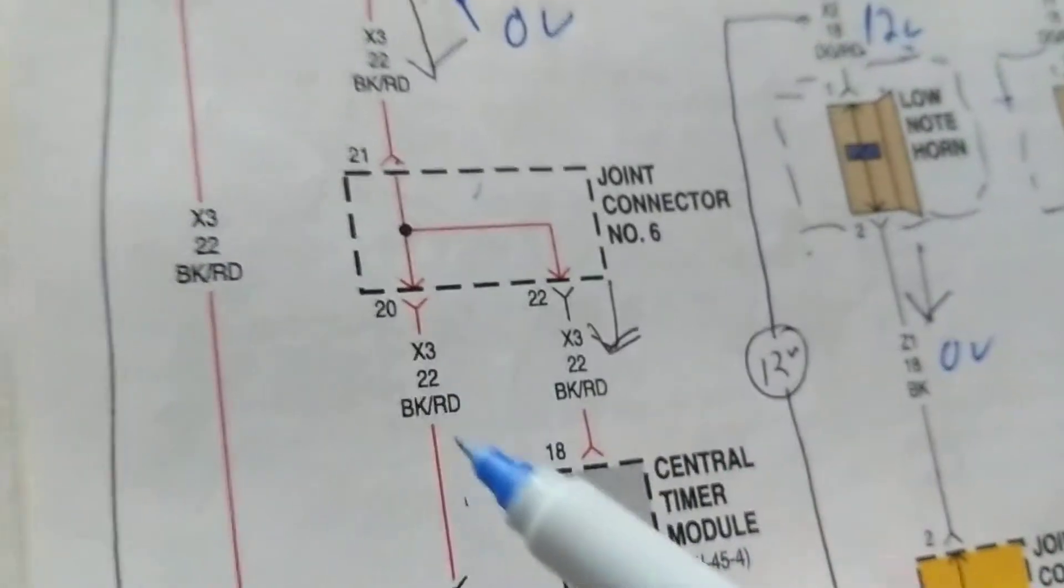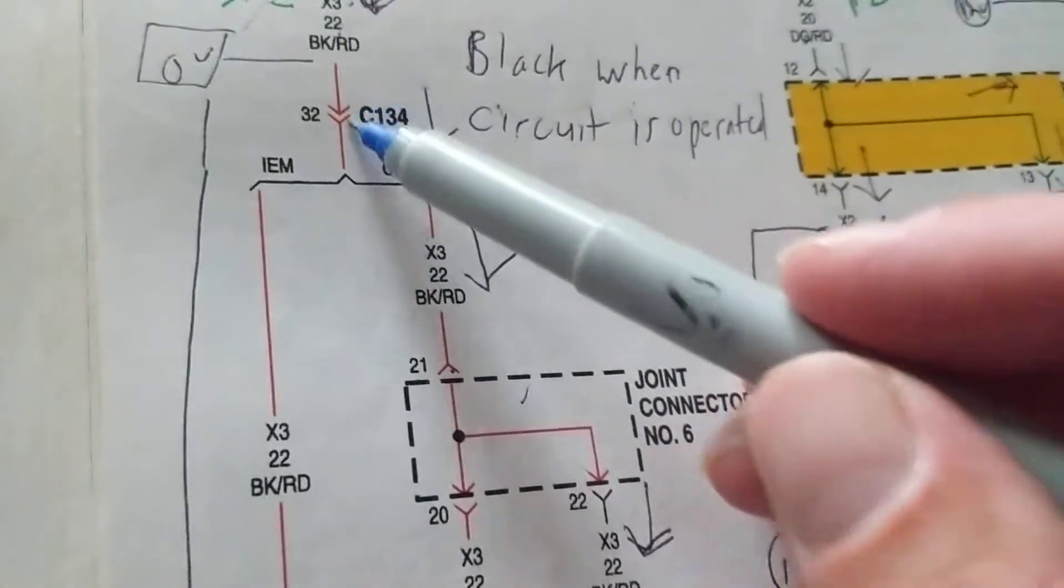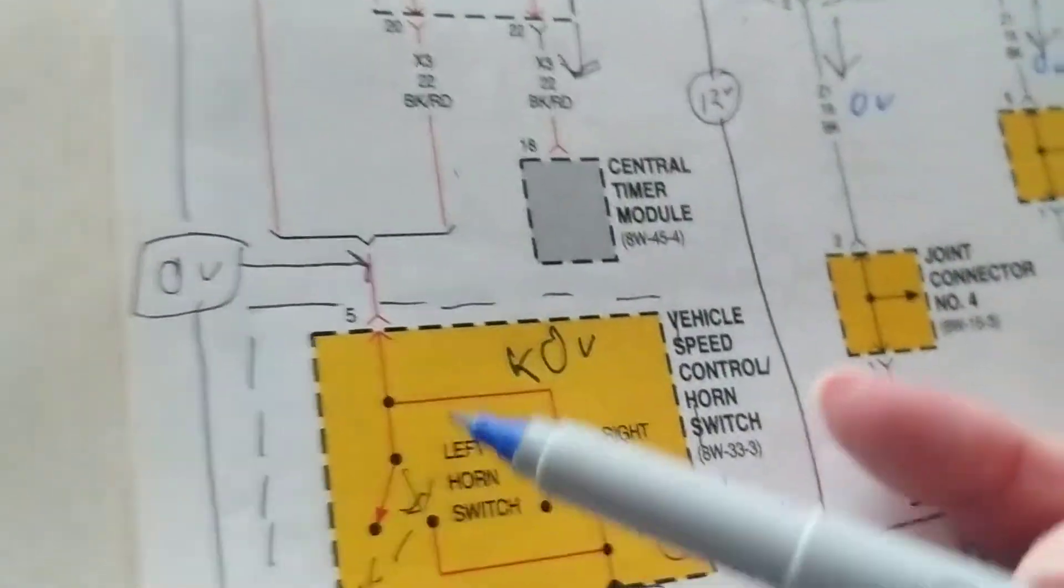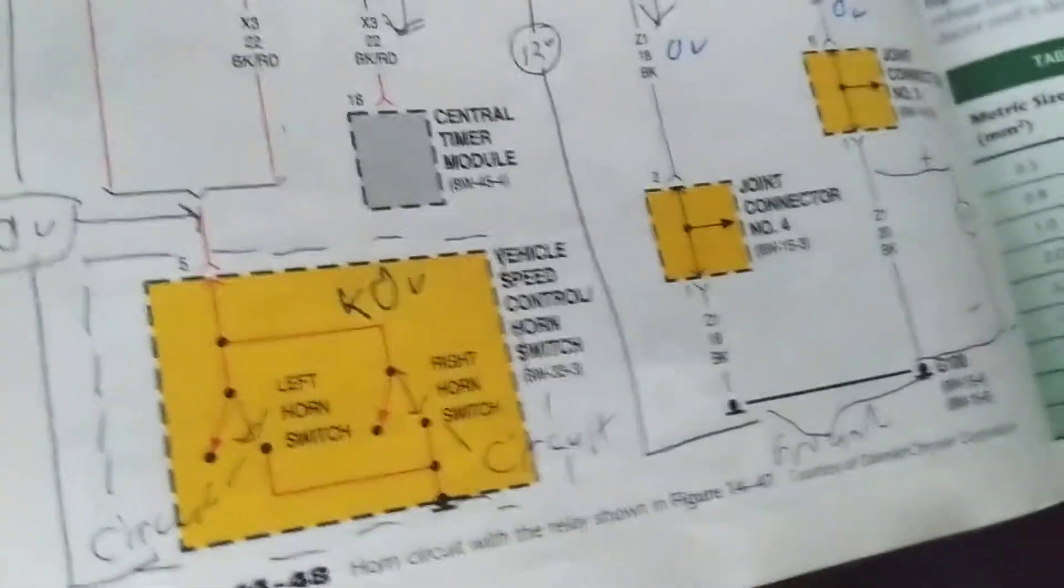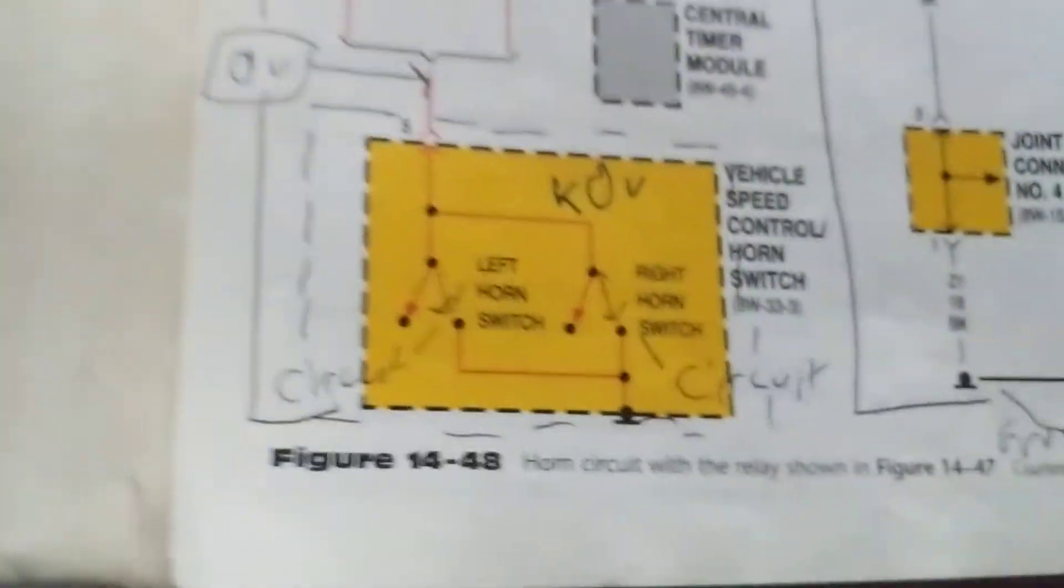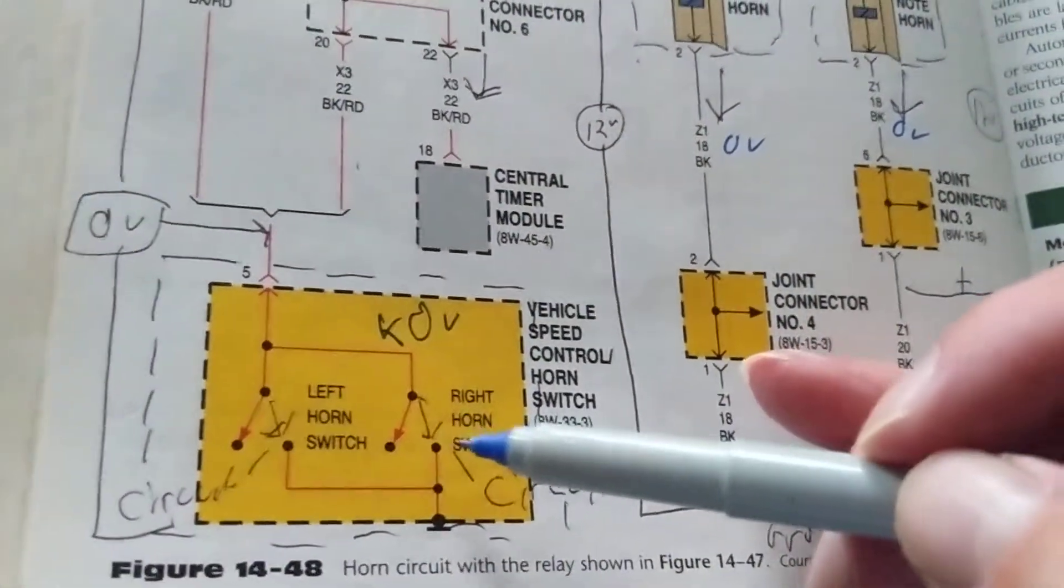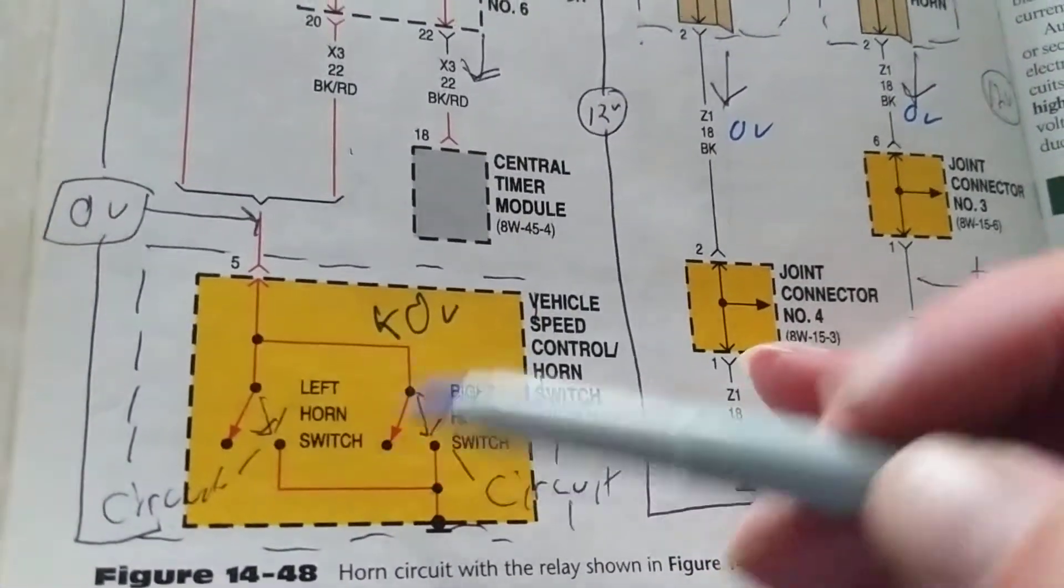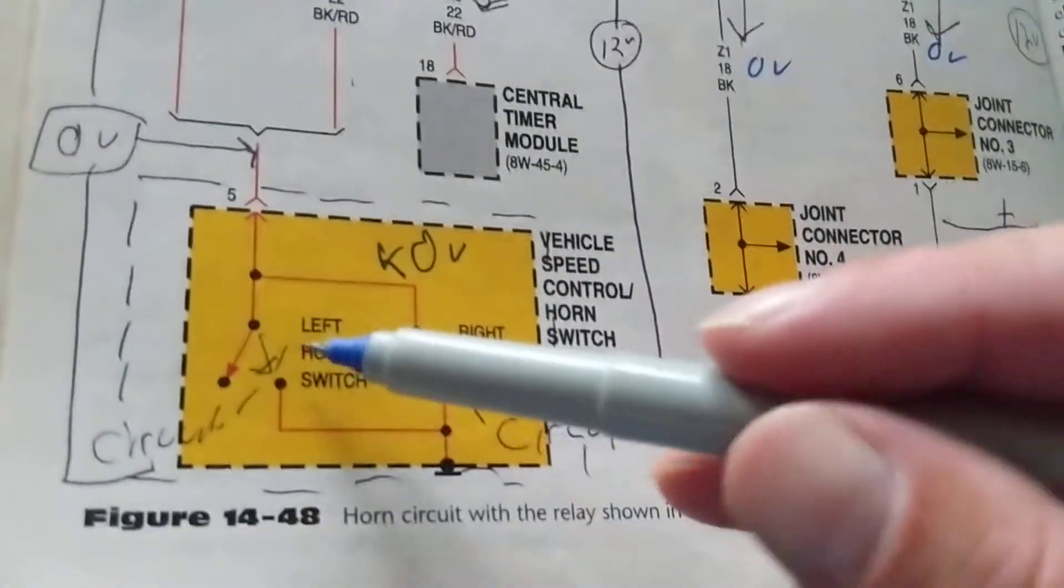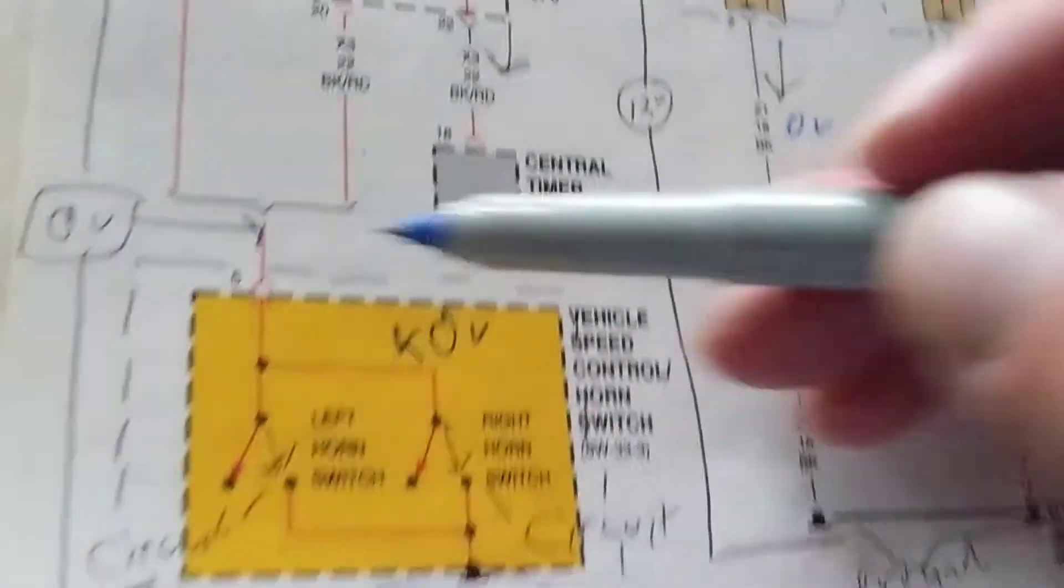Now we go over here. We had a path going here, we had a path going over here. Now you have a short from the horn switches. When you close the switches, when you close either one of these switches, either the horn switch for the left or the right horn switch, this will give you the ground. So forget about this one from the computer - this will give you the ground.